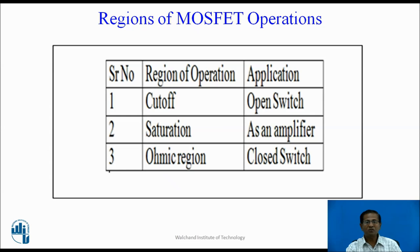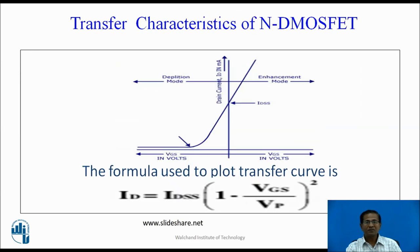These are the different operating regions of the MOSFET. Transfer characteristics of N-channel D MOSFET show the relation between VGS and drain current. When VGS is zero, drain current is maximum. As VGS increases positively, the MOSFET operates in enhancement mode and the current exceeds the maximum value. When VGS is negative, the width of the conducting channel reduces and the drain current reduces. The formula used to plot the transfer curve is: Id = Idss × (1 − VGS/Vp)².